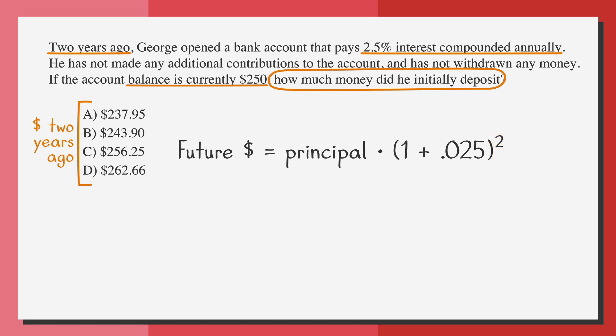We're trying to find out the amount of money George initially deposited. That's the principal. Let's call that p. And we know that after two years of interest, he has $250. So let's write that in the future money side. A quick bit of addition gives us 250 equals p times 1.025 squared. And that's our equation.